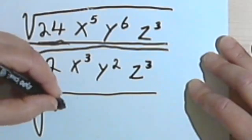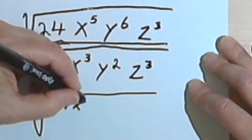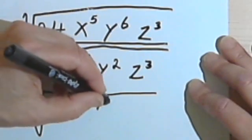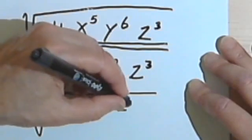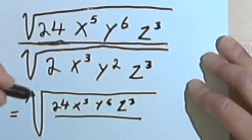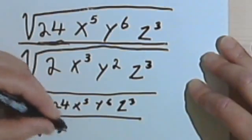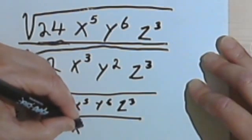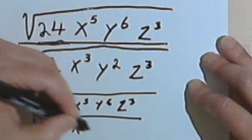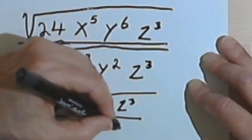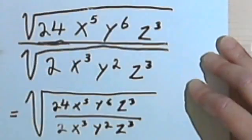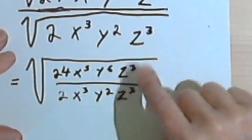So I'll have 24 x to the 5th y to the 6th z to the 3rd over 2 x to the 3rd y squared z to the 3rd and then I'm just going to simplify this fraction.